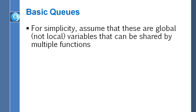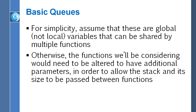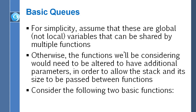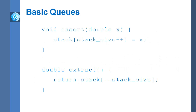We'll make things easier by assuming that the array and the variable stack_size are global variables. Since we're going to have a few different functions, they can share those variables without passing them around as parameters. For stacks, all we need are two basic functions: an insert function and an extract function. The insert function receives a double precision floating point number via parameter x and inserts that number into the stack.